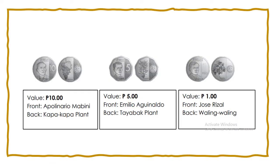This time, let's have the peso coins. We have 10 pesos, 5 pesos, and 1 peso. In front of the 10-peso coin is Apolinario Mabini. At the back is the kapa-kapa plant. In front of the 5-peso is Emilio Aguinaldo. At the back is the Tayabac plant. In front of the 1-peso is Jose Rizal. At the back is the Waling-Waling Orchids.